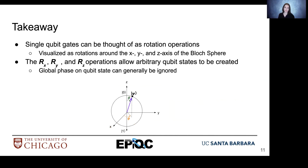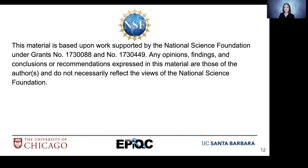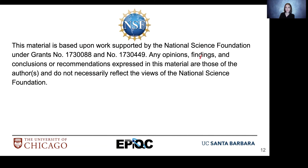A couple of key points to take away: single qubit gates can be thought of as rotation operations, visualized as rotations around the x, y, and z axes of the Bloch sphere. We introduced the Rx, Ry, and Rz operations, which allow arbitrary qubit states to be created. And remember, global phase on a qubit state can generally be ignored going forward.